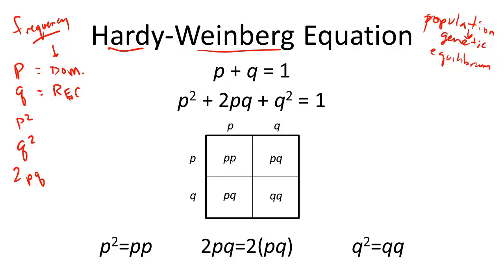So the p squared, as you can see down here, 2 little p's, is a homozygous dominant individual. q squared, you might have guessed it, is a homozygous recessive individual.